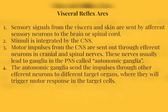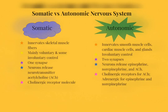These nerves usually lead to ganglia in the PNS called autonomic ganglia. Fourth, the autonomic ganglia send the impulses through other efferent neurons to different target organs, where they will then trigger a motor response in the target cells.